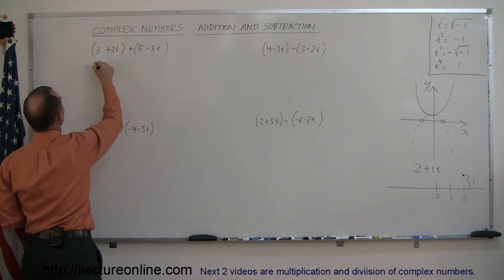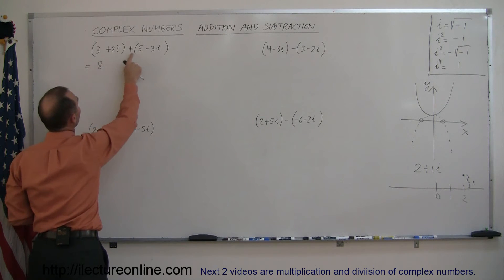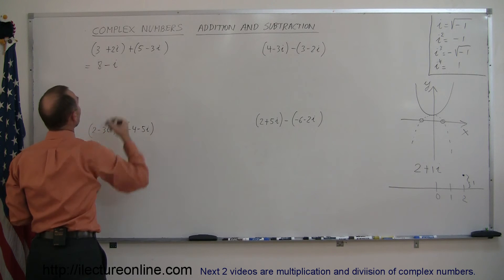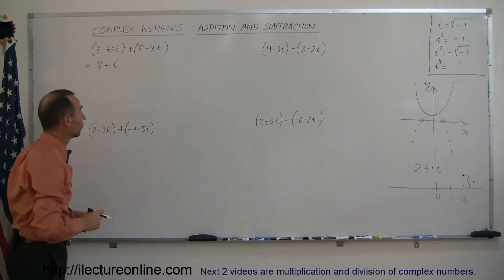So 3 plus 5 is 8, and 2i minus 3i is minus 1i, and that is the solution for that. Fairly simple.